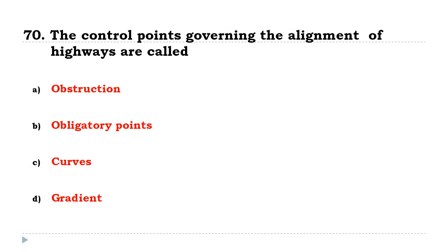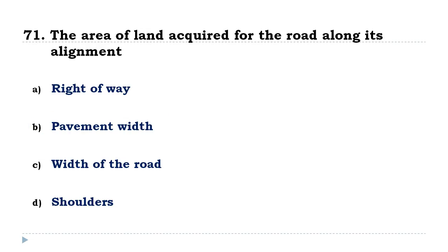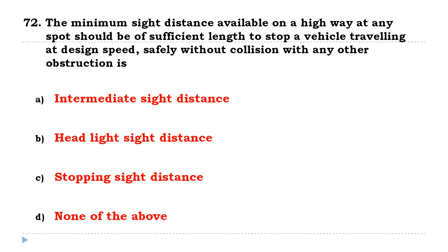The control points governing the alignment of highways are known as the obligatory points. The area of land acquired for the road along its alignment is called the right of way. The minimum sight distance available on a highway at any spot should be of sufficient length to stop a vehicle travelling at design speed safely without collision with any other obstruction, called stopping sight distance.